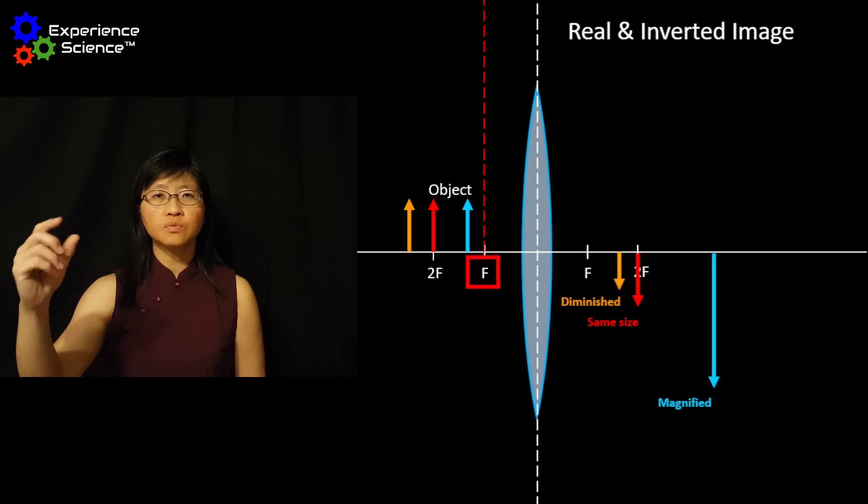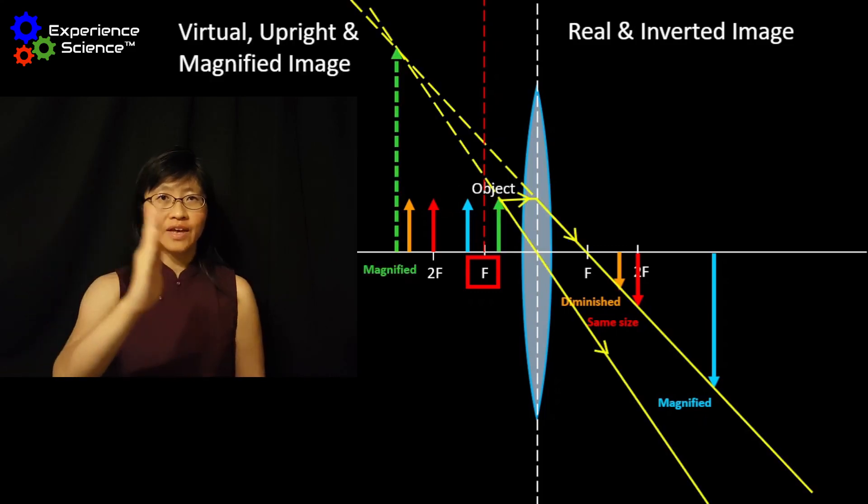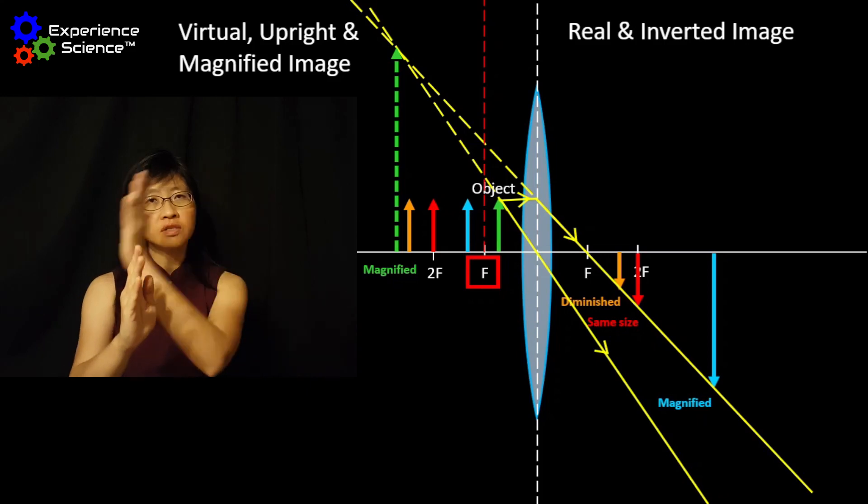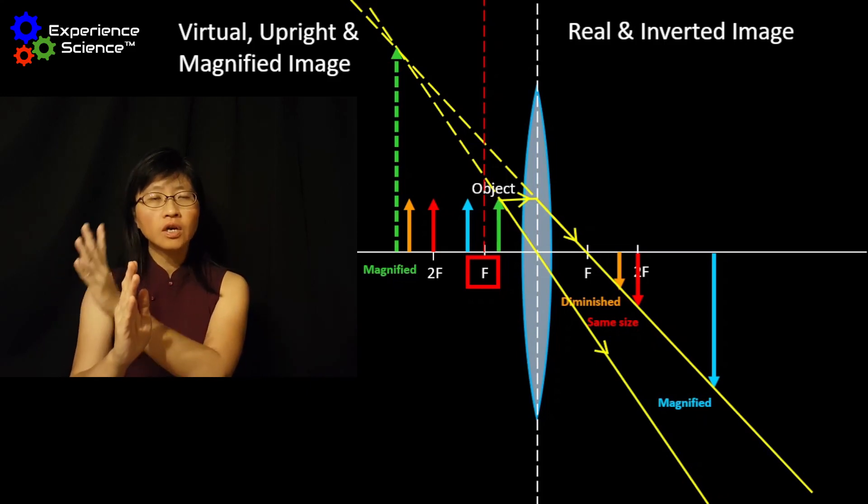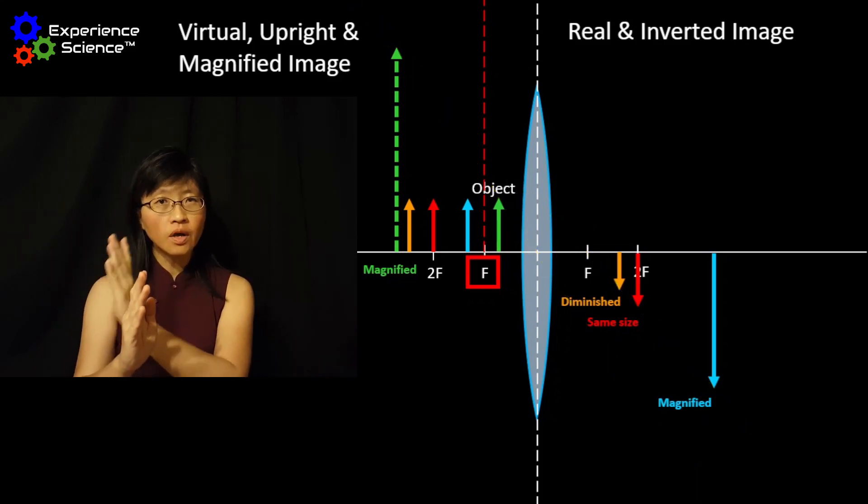When the object is placed between F and the lens, the image formed will be on the same side as the object. It will always be virtual, upright, and magnified.